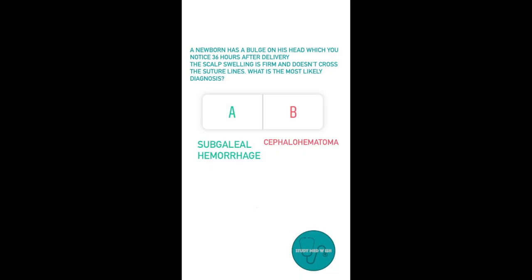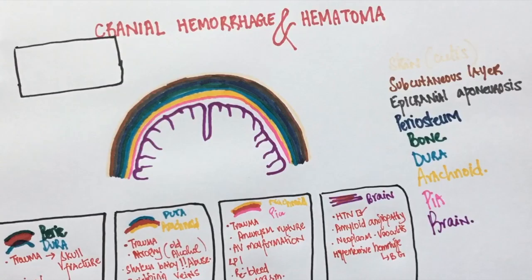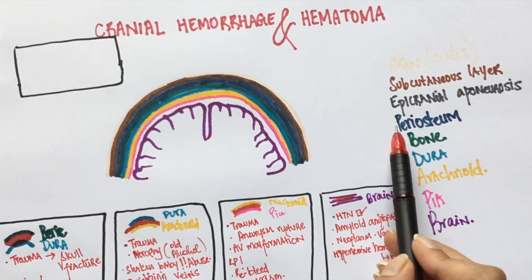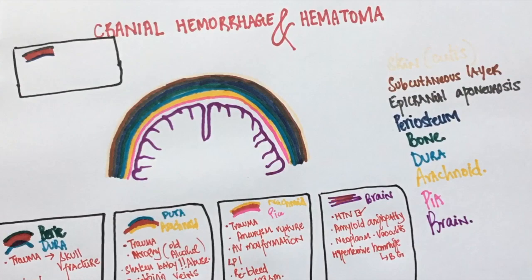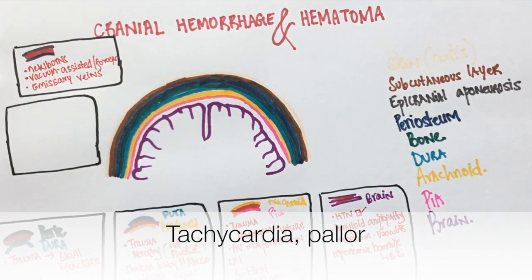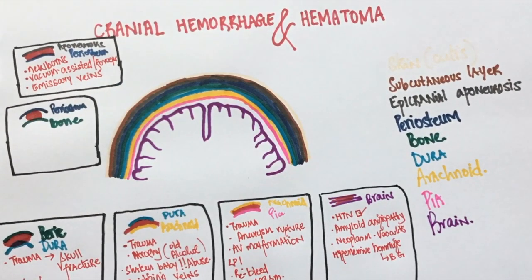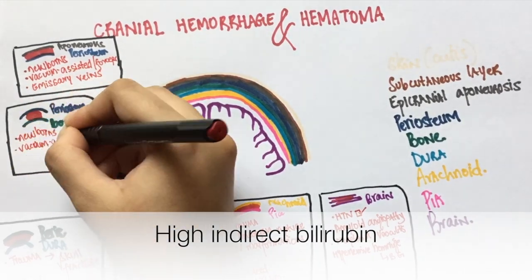Question 5: A newborn has a bulge on his head noticed 36 hours after delivery. The scalp swelling is firm and doesn't cross the suture lines. What is the most likely diagnosis? Option A, subgaleal hemorrhage. Option B, cephalohematoma. The answer is cephalohematoma. Both conditions can be caused by vacuum-assisted vaginal delivery and forceps delivery. Subgaleal hemorrhage occurs between the aponeurosis and the periosteum — it is free to move, can cross the suture lines, and presents late with tachycardia and pallor. Cephalohematoma is between the periosteum and the bone, cannot cross the suture lines, and if the hematoma breaks down, patients may have elevated indirect bilirubin and might require phototherapy.